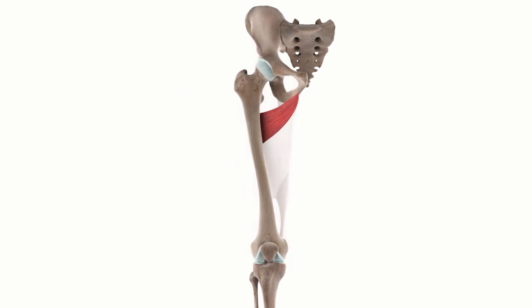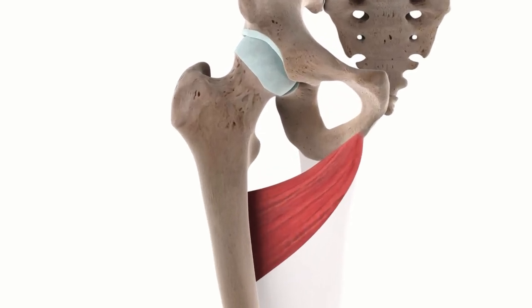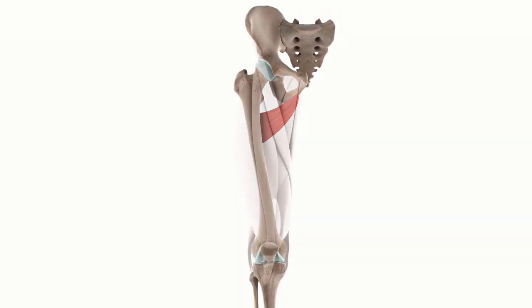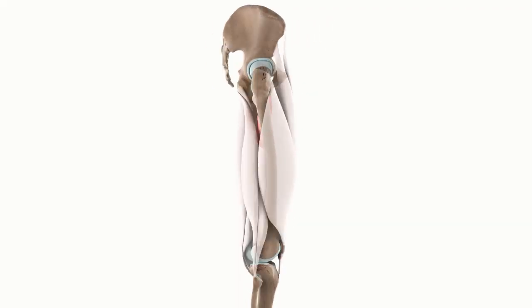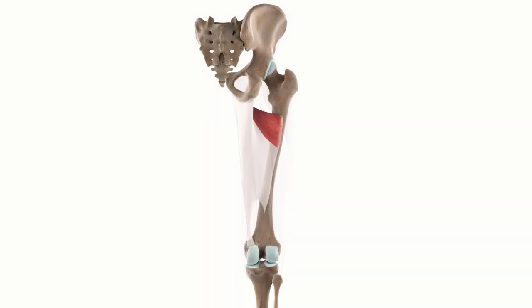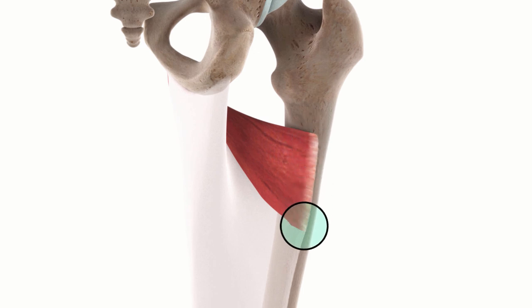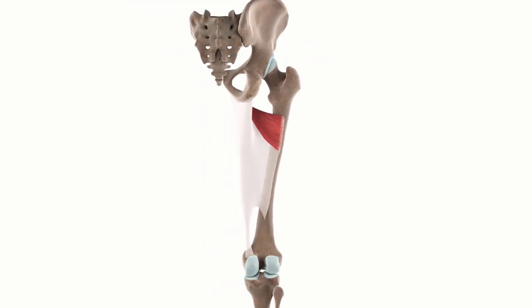The fibres of the adductor minimus have their origin on the inferior pubic ramus of the pubic bone. They then travel from here almost horizontally to insert into the medial margin of the linea aspera femoris, medial to the large gluteus maximus muscle.